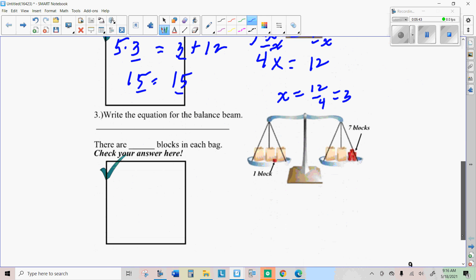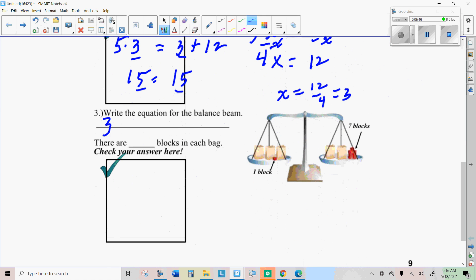All right, so the equation for this one will be 3x plus 1 on the left side equals 2x plus 7 on the right side. See if you can figure out how many blocks are in each bag there. So I got six blocks in a bag there. And what I did is I got rid of two bags from each side of the scale and one block from each side of the scale. And I ended up with one bag left, which is x equals the six blocks here.